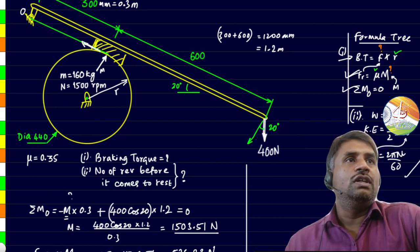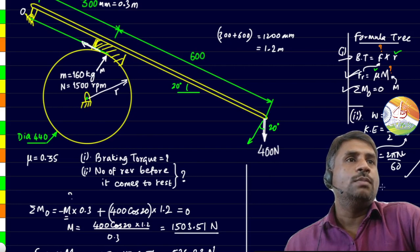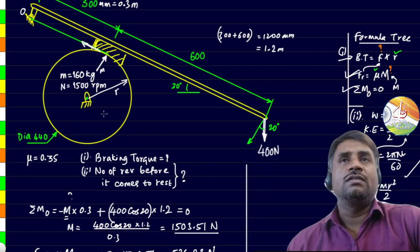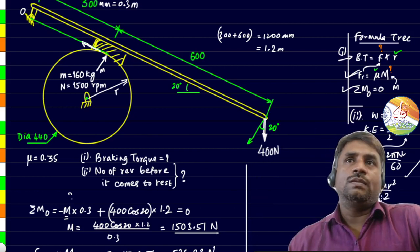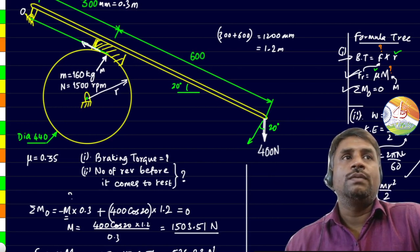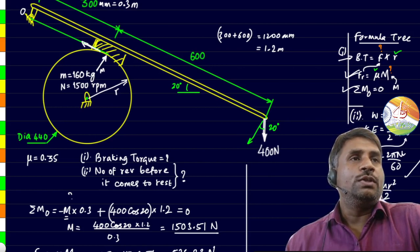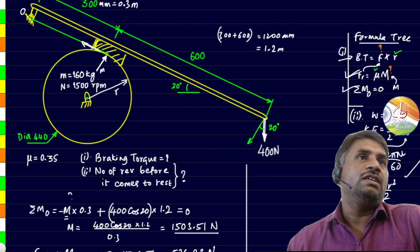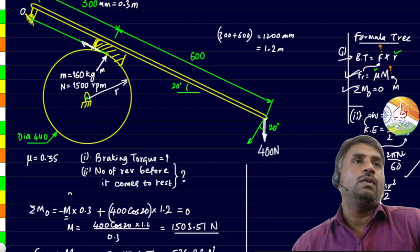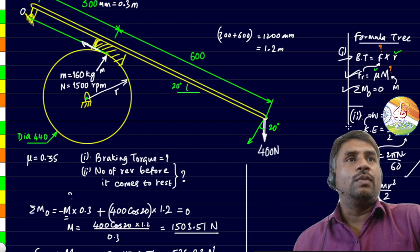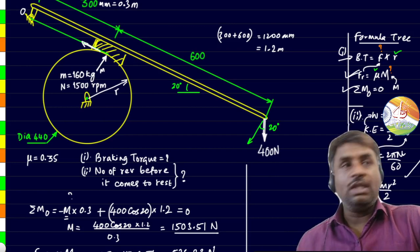About the I, I is the mass moment of inertia. That is m r square by 2 for a solid disk, considering this disk is solid. Its mass is given, radius is what we have to take, and we will get the mass moment of inertia. Substituting both of these we will get the kinetic energy, and that kinetic energy we have to take it equal to the work.